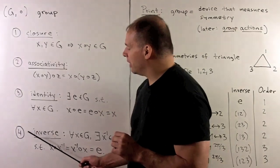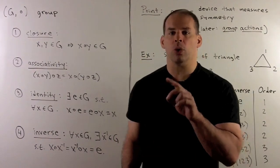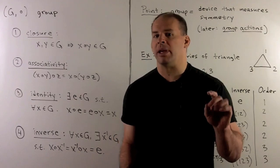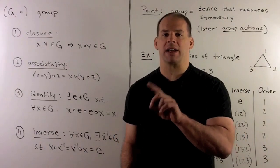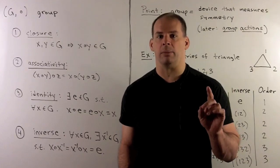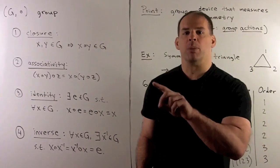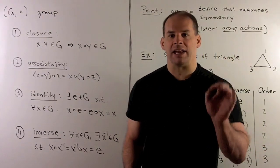Finally, we have inverses for elements. If I take any X in the group, we'll have another element X inverse, such that X times X inverse equals X inverse times X equals the identity element. So no matter what element I'm at, say X, I can always multiply by another element to get to the identity.